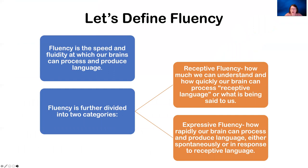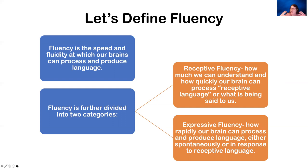So let's define fluency. Fluency in general is the speed and fluidity at which our brains can process and produce language. Currently I am speaking to you with fluency. It has nothing to do with being accurate — think about how many native English-speaking Americans there are that do not speak with correct grammar. Fluency is speaking with cadence, fluidly, and at a certain pace.